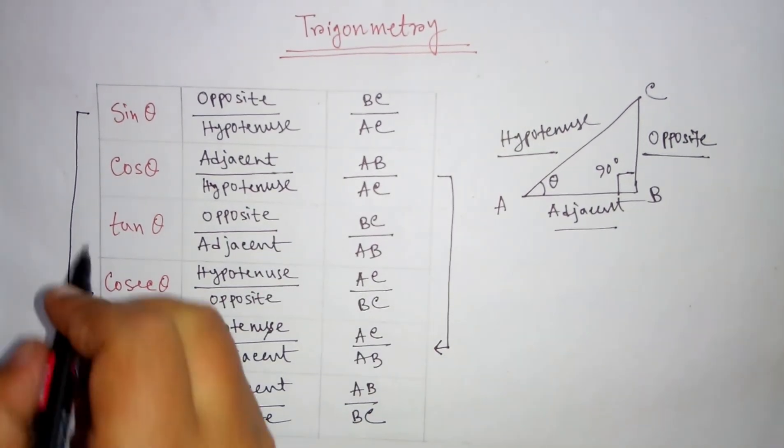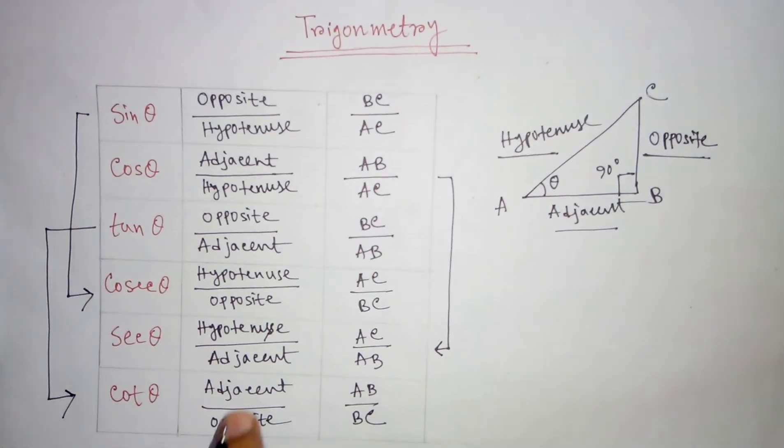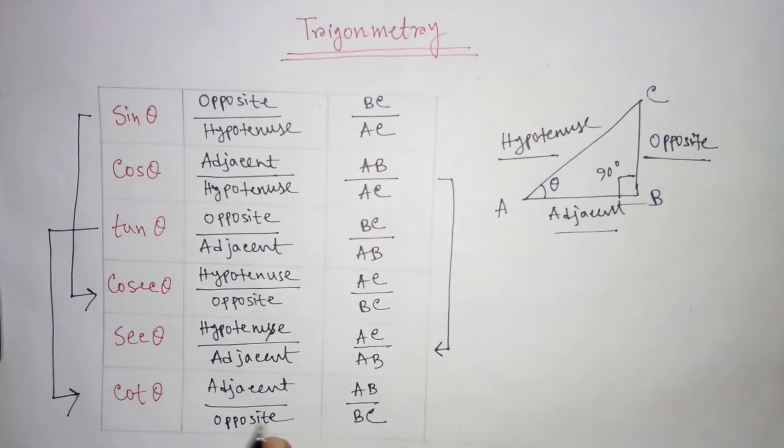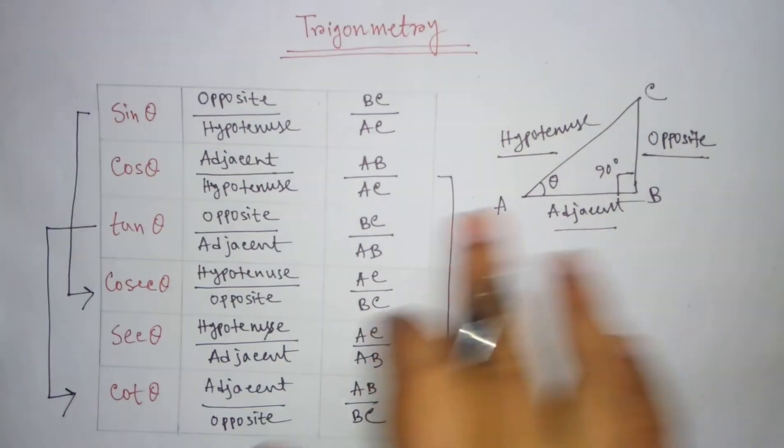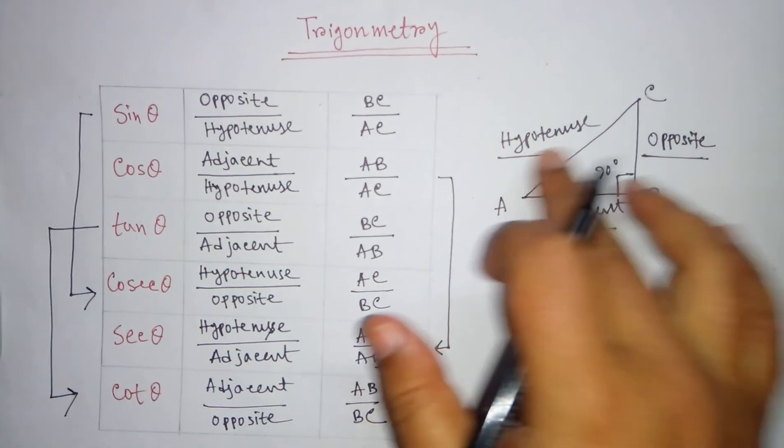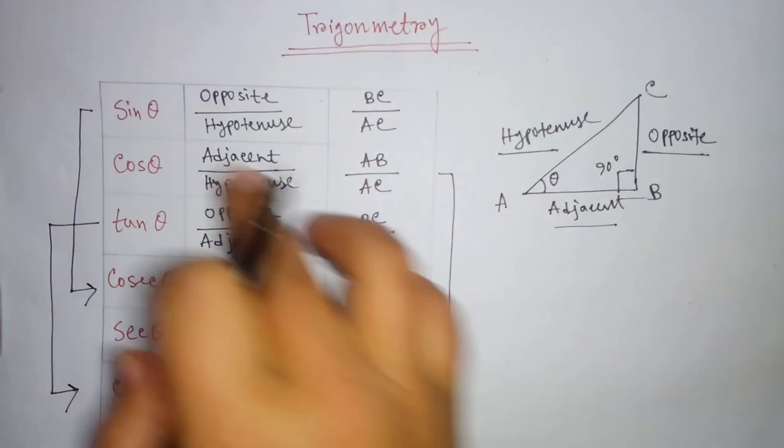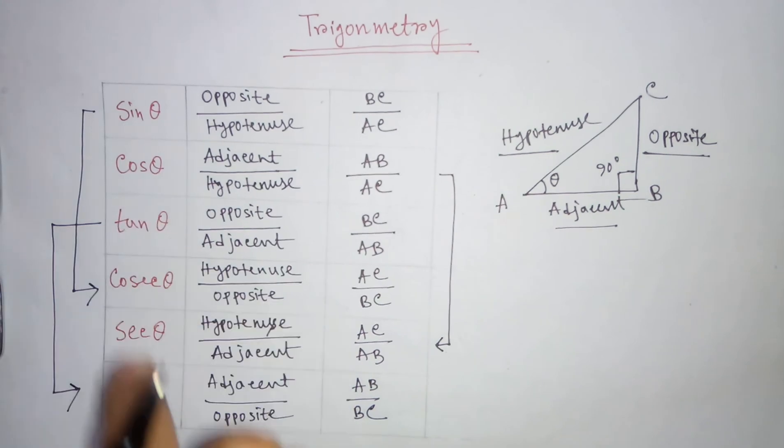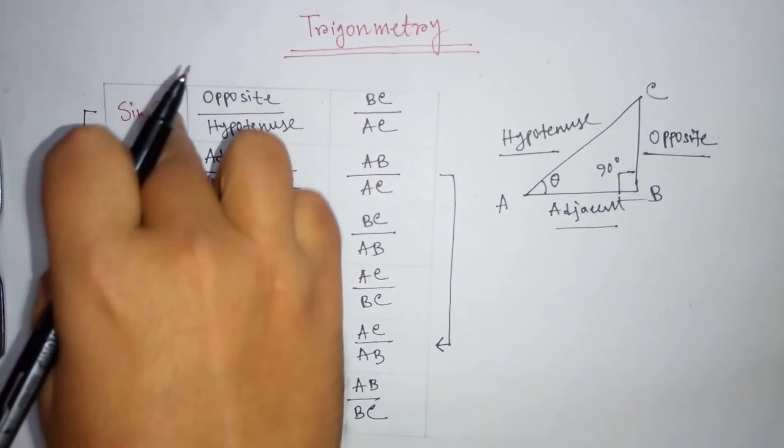Cot theta is the opposite of tan theta, that is adjacent divided by opposite. These are the basics of trigonometry. If you know the hypotenuse, opposite, and adjacent of a right angle triangle, you can easily calculate sin theta, cos theta, tan theta. Cosec theta, sec theta, and cot theta are the opposites of sin, cos, and tan.